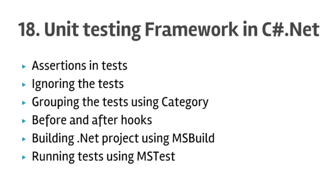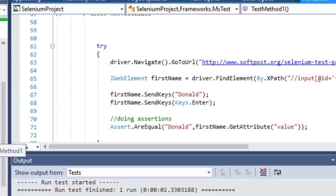Hello friends, welcome to lecture number 18, that is unit testing framework in C# .NET. In this lecture you will learn how to add assertions in tests, how to ignore the test using the Ignore attribute, how to group tests using the Category attribute, how to insert before/after hooks at method and class level, and how to build the project using MSBuild and run tests using MSTest.